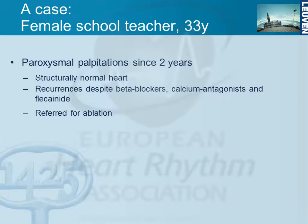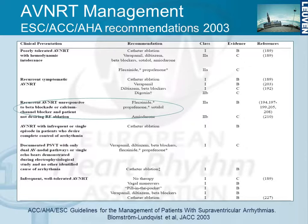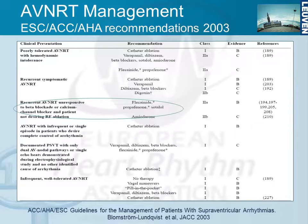The case is a 33-year-old female school teacher with a typical story: palpitations for a couple of years, structurally normal heart. She received many drugs — beta blockers, calcium antagonists, even flecainide — and was finally referred for ablation. According to the guidelines, if AVNRT is unresponsive to beta blockers or calcium channel blockers and the patient is not desiring RF ablation, flecainide is an option. Flecainide can interfere with fast pathway conduction and may be helpful in some AVNRT patients, though RF ablation would be preferred. These 2003 guidelines remain largely valid.